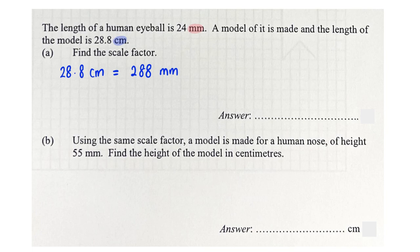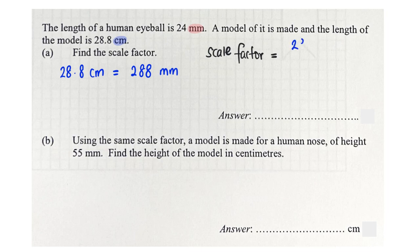Finding the scale factor simply means: since this model is 288 mm and the human eyeball is 24 mm, how much bigger is that? The scale factor equals the image over the original, giving a value of 12. This means the model is 12 times larger than the human eyeball.